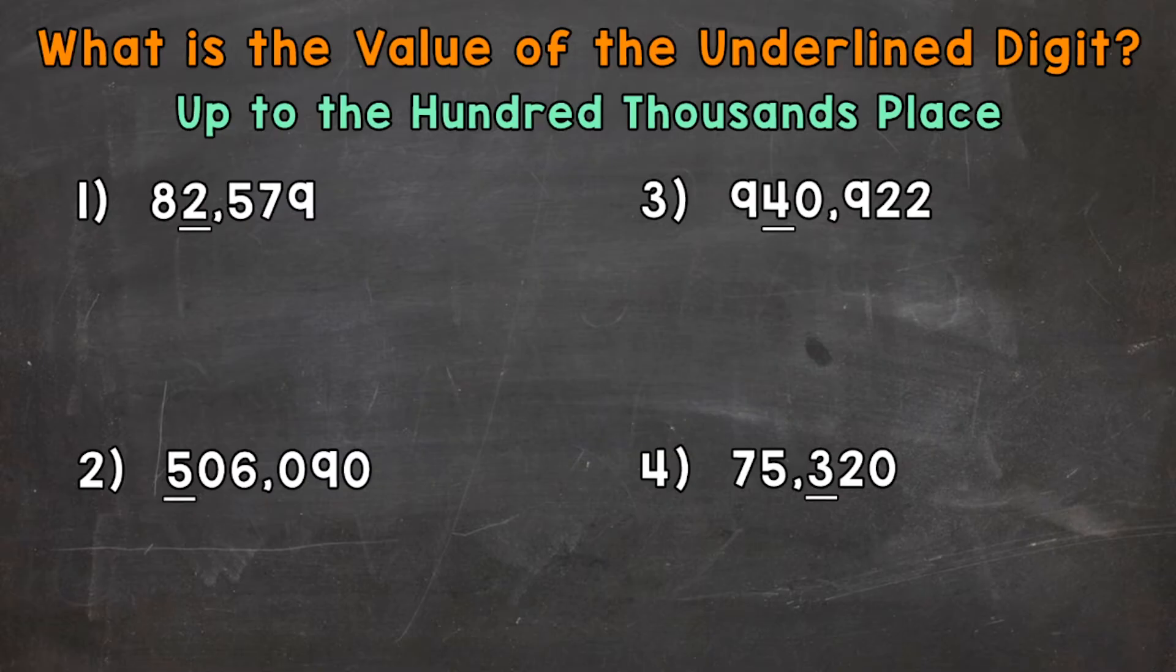So let's jump into number one, where we have 82,579. Now we have the two in the thousands place underlined. So that two represents two groups of 1,000. So the value of that two is 2,000.